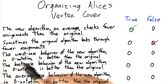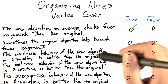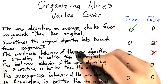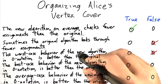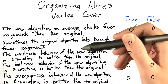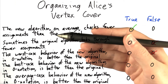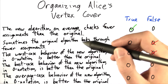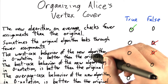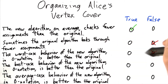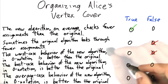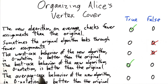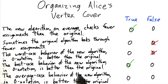Is the worst-case behavior of the new algorithm in O-notation better than the original? This is actually false. You just have to realize that sometimes the new algorithm is still going to have to check through every possible assignment — sometimes that's the best minimum vertex cover you can hope to find. And since that's the worst case, and it's the same as the old algorithm, the worst-case behavior in O-notation is also just as bad as the original.